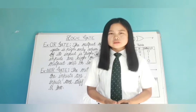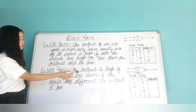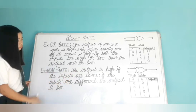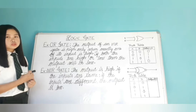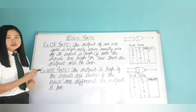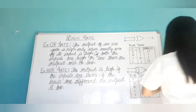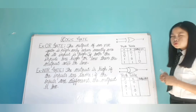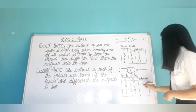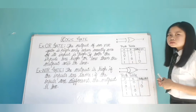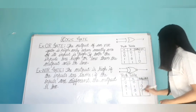Now, we will see XNOR gate. The output of XNOR is high if the inputs are the same. If the inputs are different, the output is low. So in XNOR gate, to obtain a high output, both the inputs must be the same. Truth table: both inputs low gives high output; one input high and one low gives low output; one input high and another low gives low output; both inputs high gives high output.